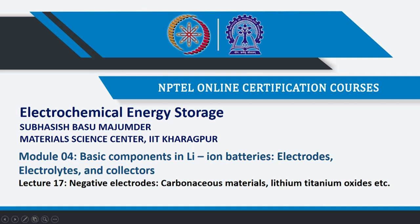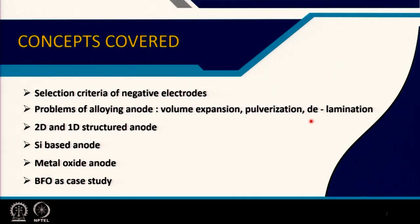Welcome to my course Electrochemical Energy Storage. This is module number 4, describing the basic components in lithium-ion batteries including the electrodes, electrolytes and collectors. In lecture number 17 we will be talking about the negative electrodes and particularly carbonaceous material, lithium titanium oxides and other relevant materials. The selection criteria of negative electrode will be covered first.